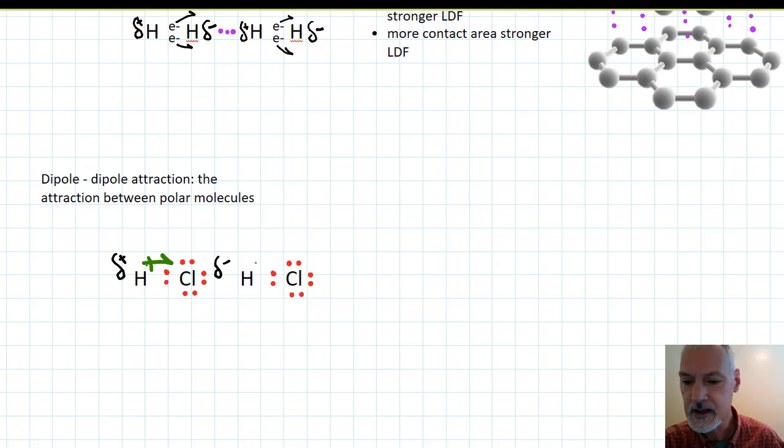This happens also in the neighboring molecule beside it, which has a slightly positive end and a slightly negative end. And as a result, we can have this interaction between the two. This happens between any two molecules that exist and are polar.